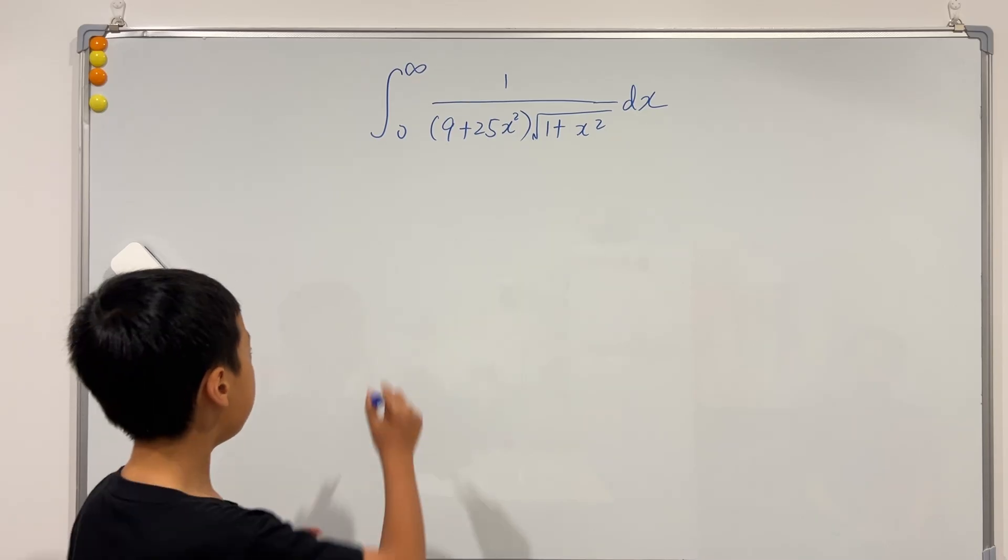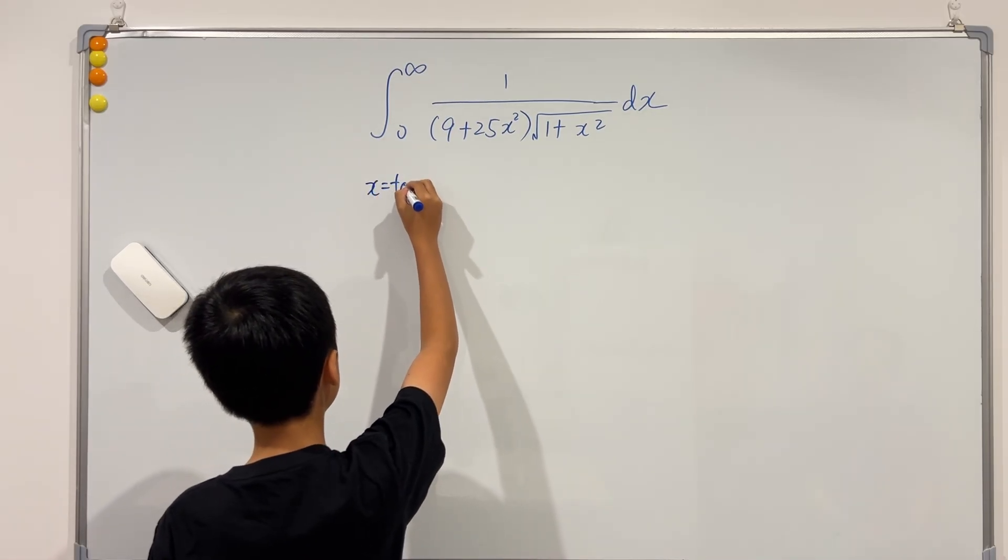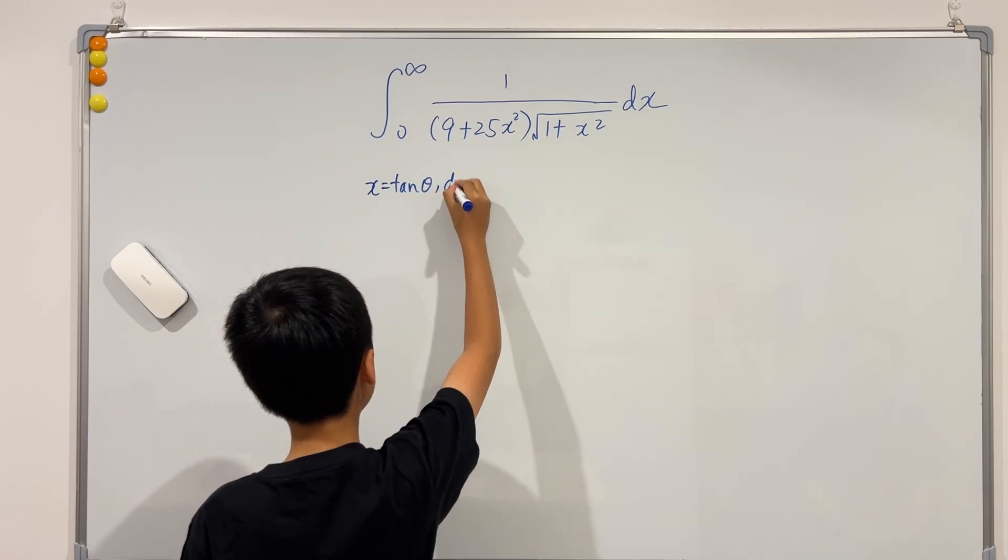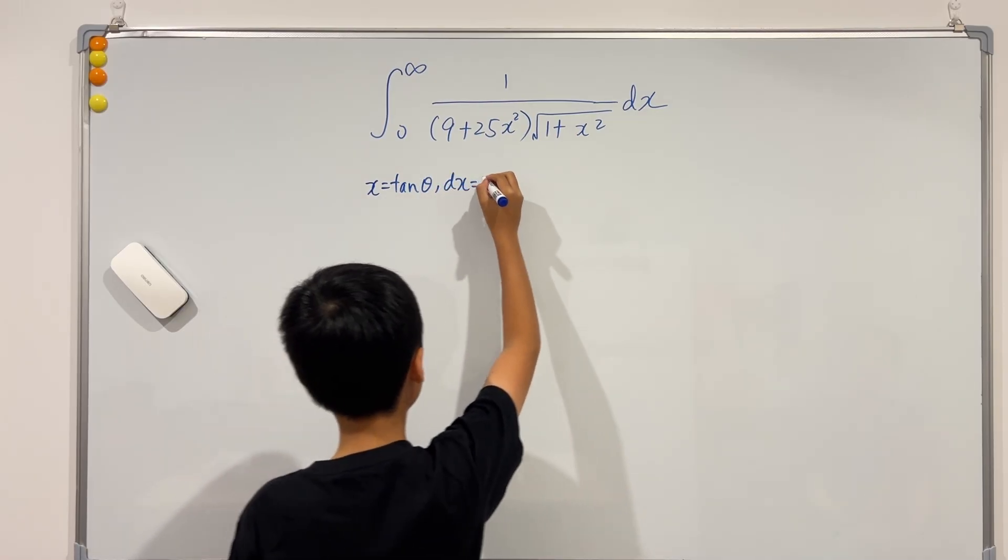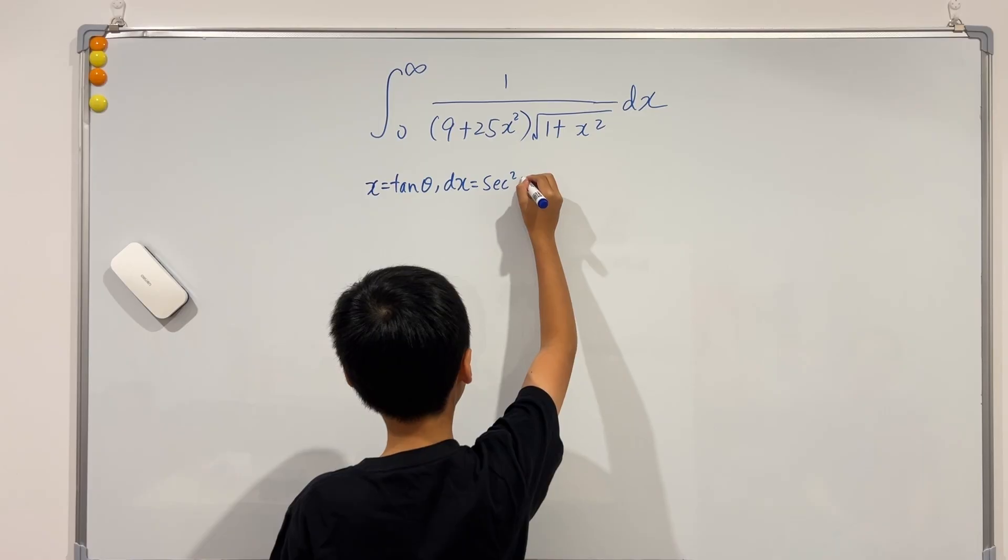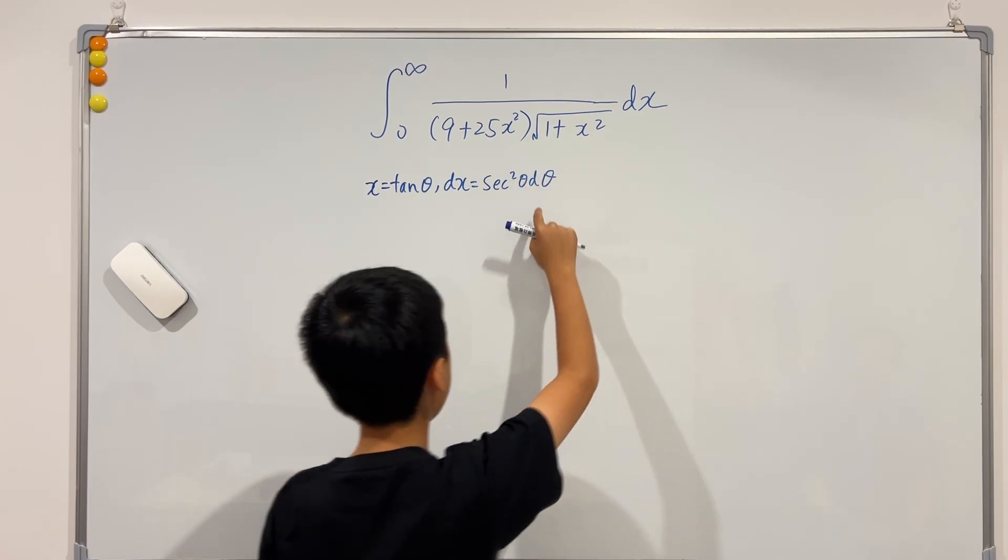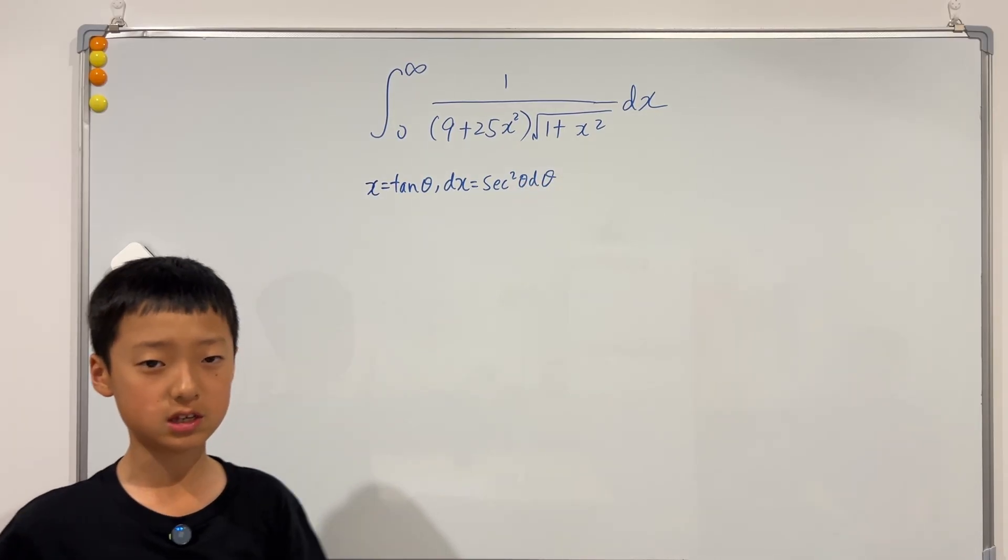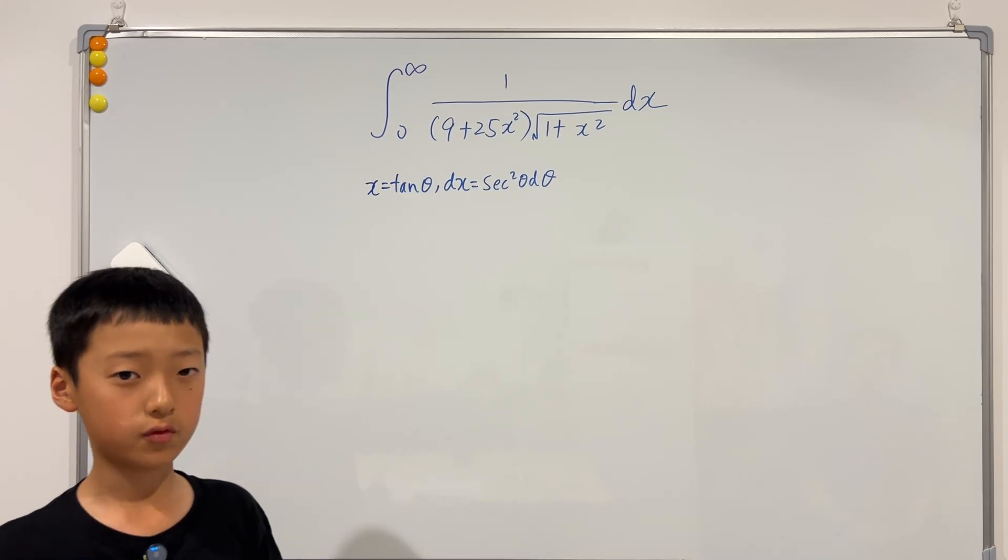So if I just let x to be tangent, then you see that dx is sec squared. And the bounds, instead of going from 0 to infinity, go from 0 to pi over 2.